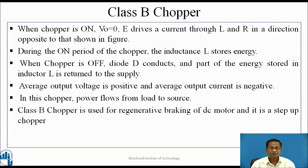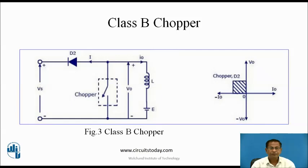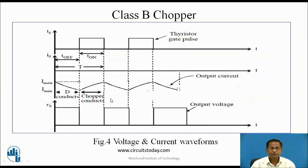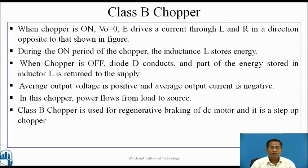In this circuit, the motor works as a generator. When the chopper is on, V0 is equal to zero, and E drives the current through L and R in the direction opposite to that shown in the figure. The current flows through E, L, and the chopper switch in the anticlockwise direction. Assume that this direction of current is negative and for this duration the load voltage is zero. During on time, the inductance L stores the energy. When the chopper is off, the diode conducts and part of the energy stored in the inductor L is returned to the supply. Average output voltage is positive and average output current is negative; power flows from load to source.